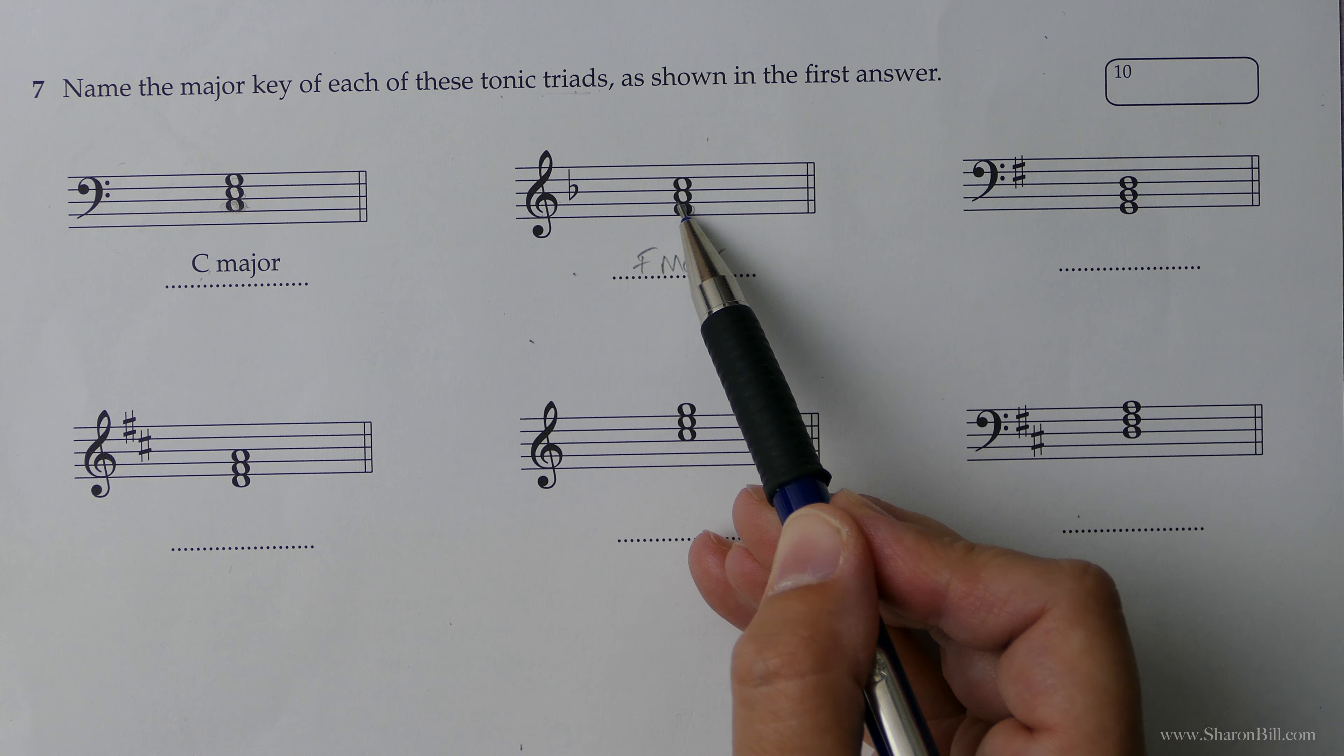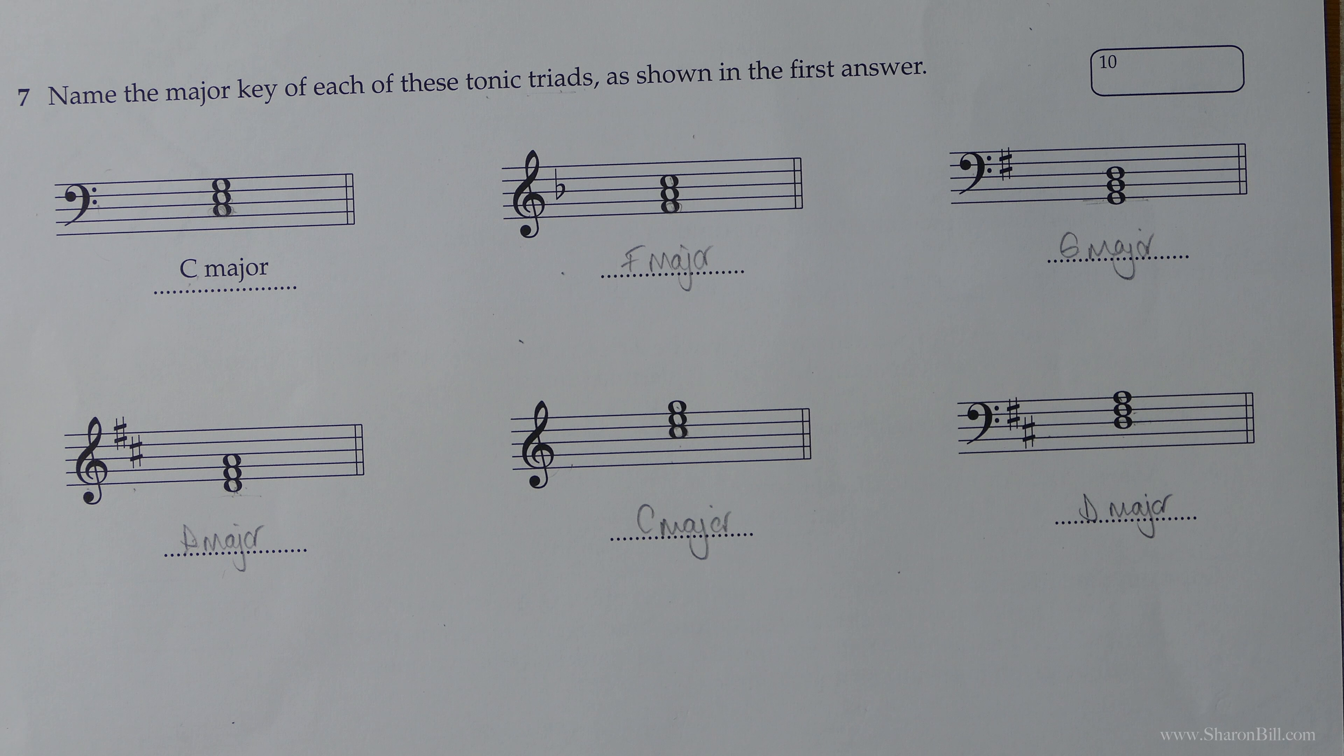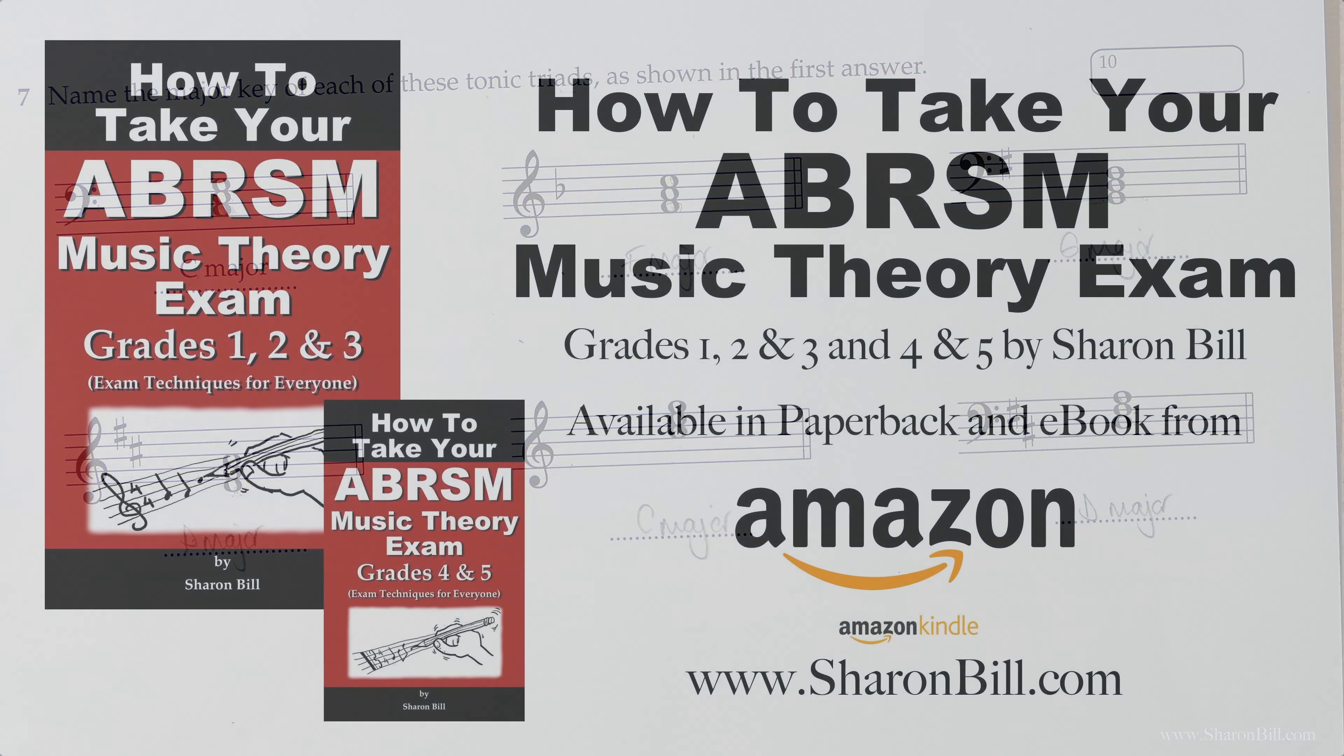And we've already worked out that D major has a key signature of two sharps. So we know that this is in D major too. We're in the bass clef now though. And we know that the tonic should be D. Good boys deserve. First, third, fifth. D, F sharp, A. And there we go. That's job done.